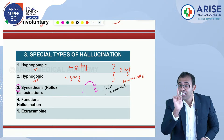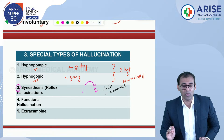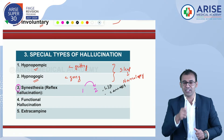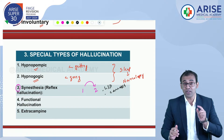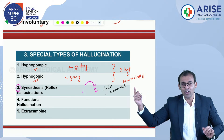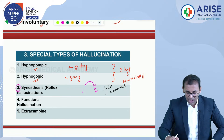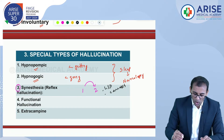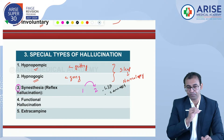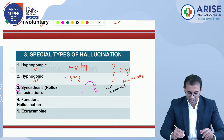These five special types of hallucination do not obey all four criteria of real hallucination. The four criteria are: absence of any stimulus, outer objective space, as vivid as real, and involuntary. Overall, the most common type of hallucination is auditory.